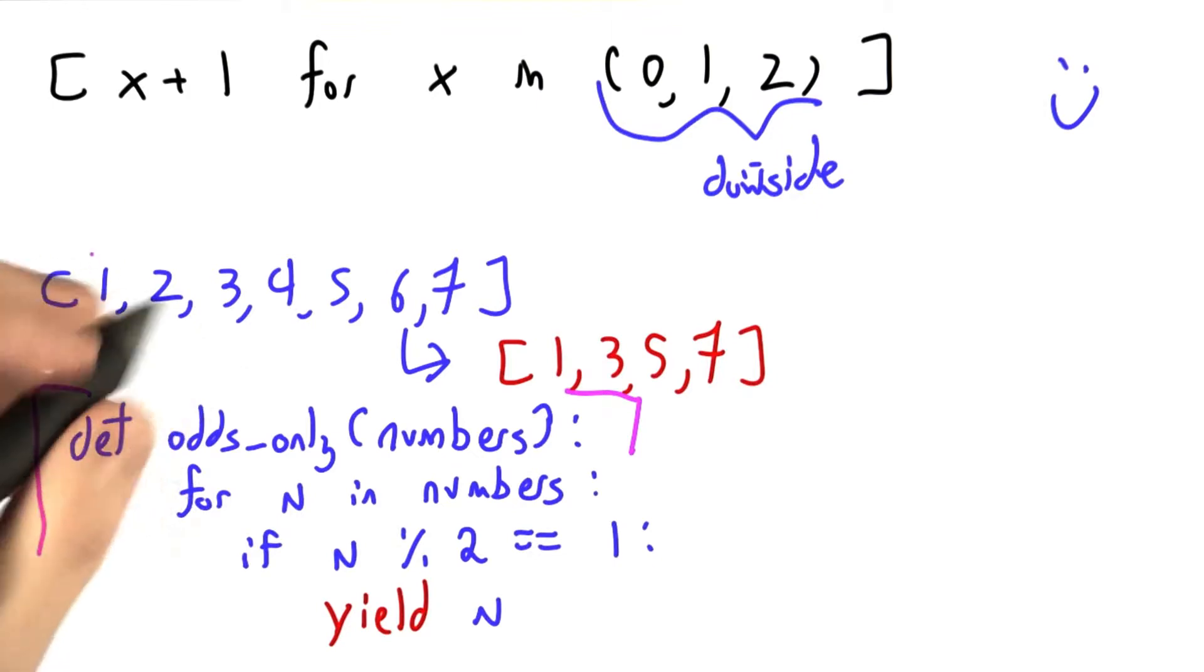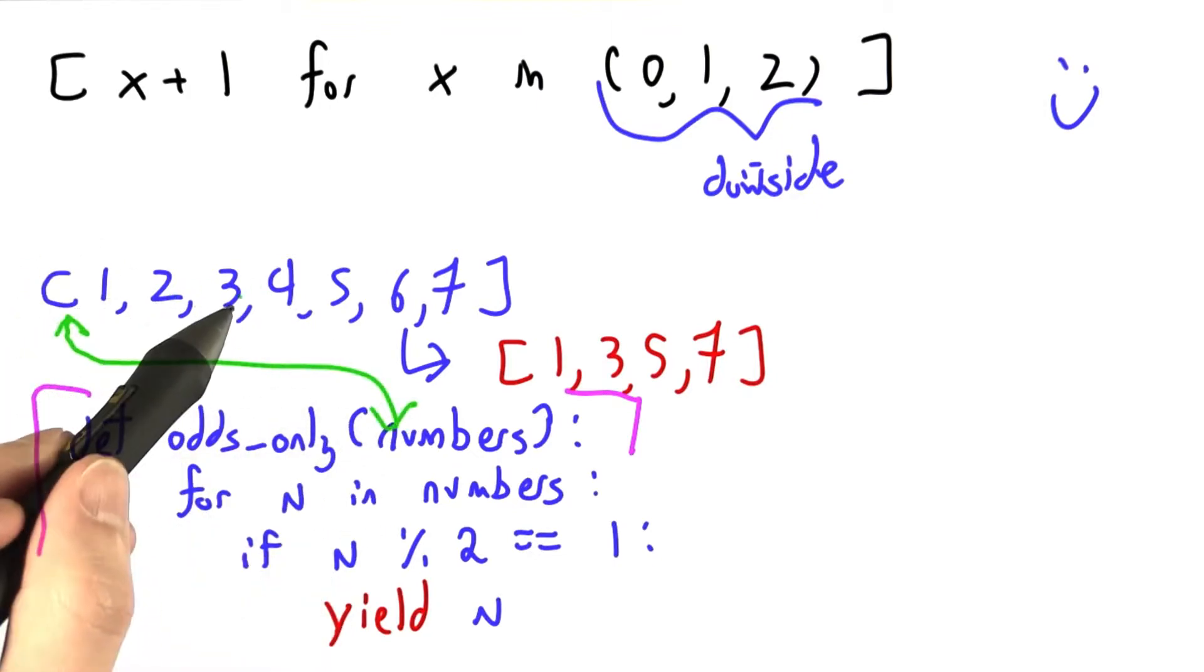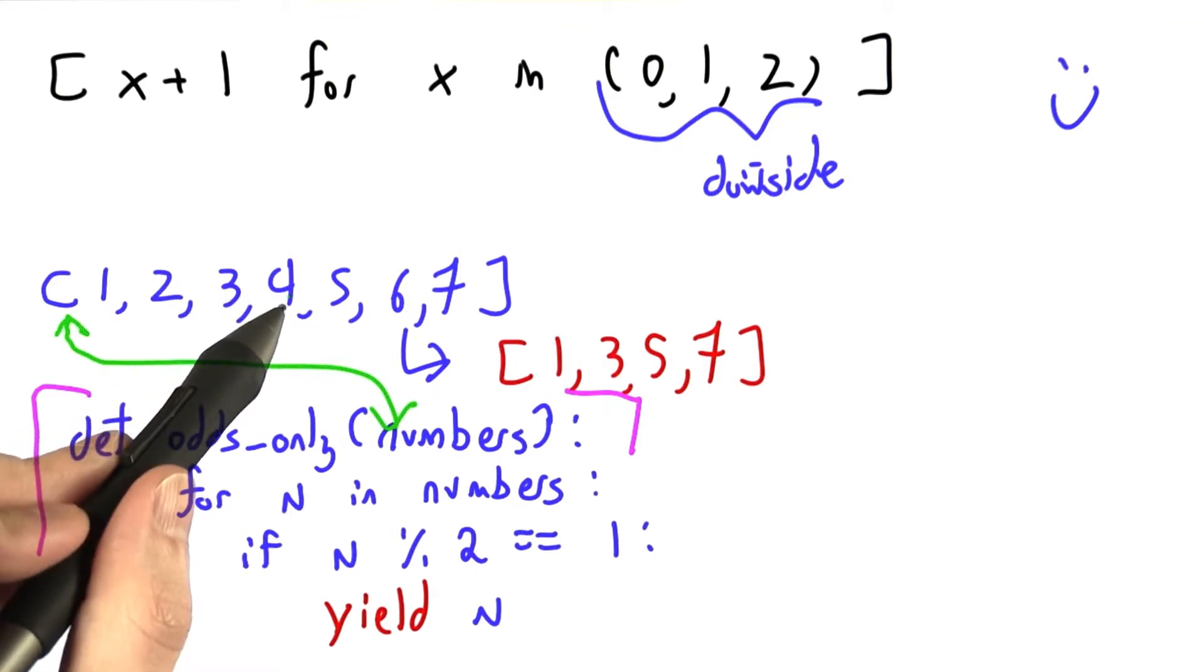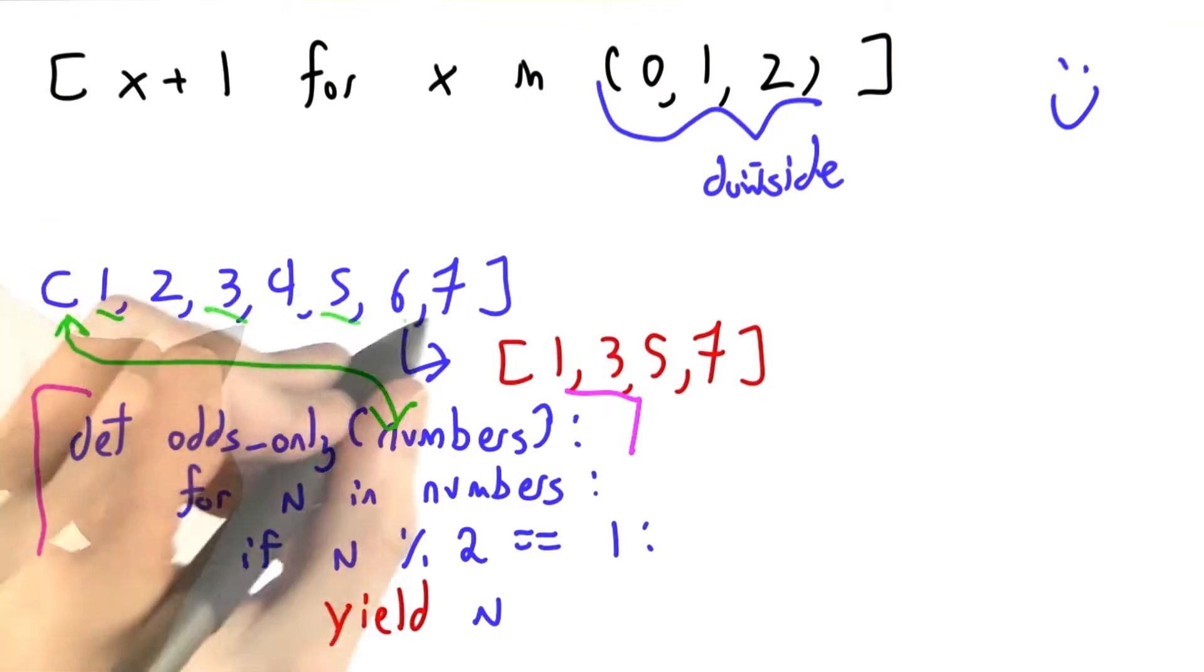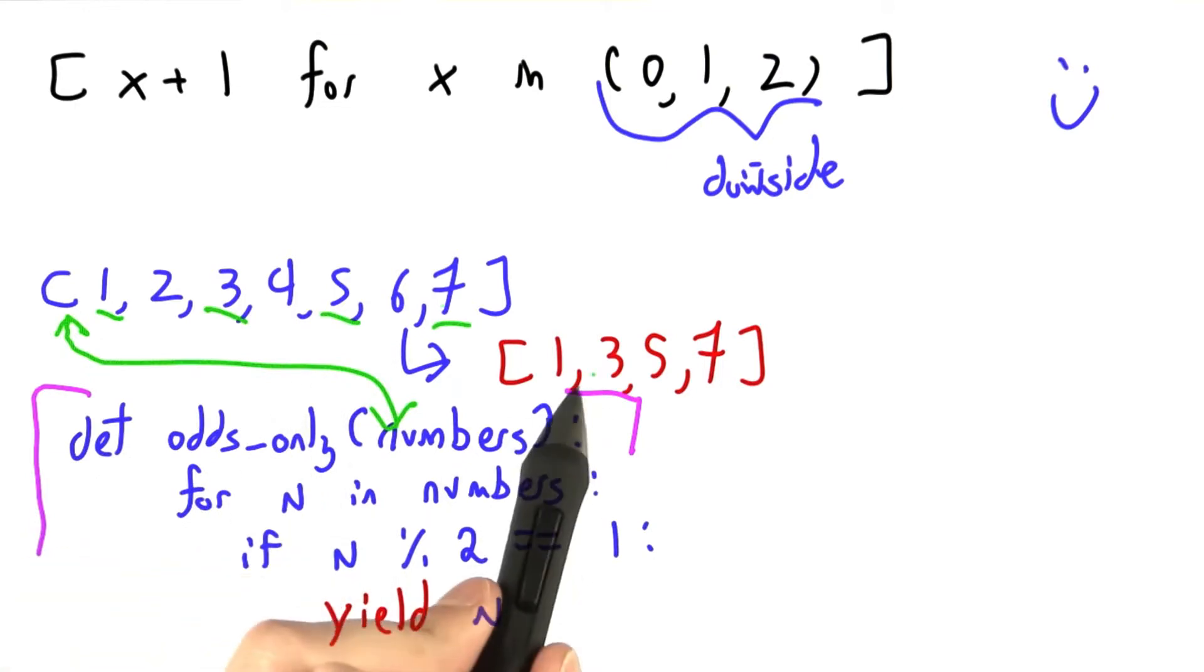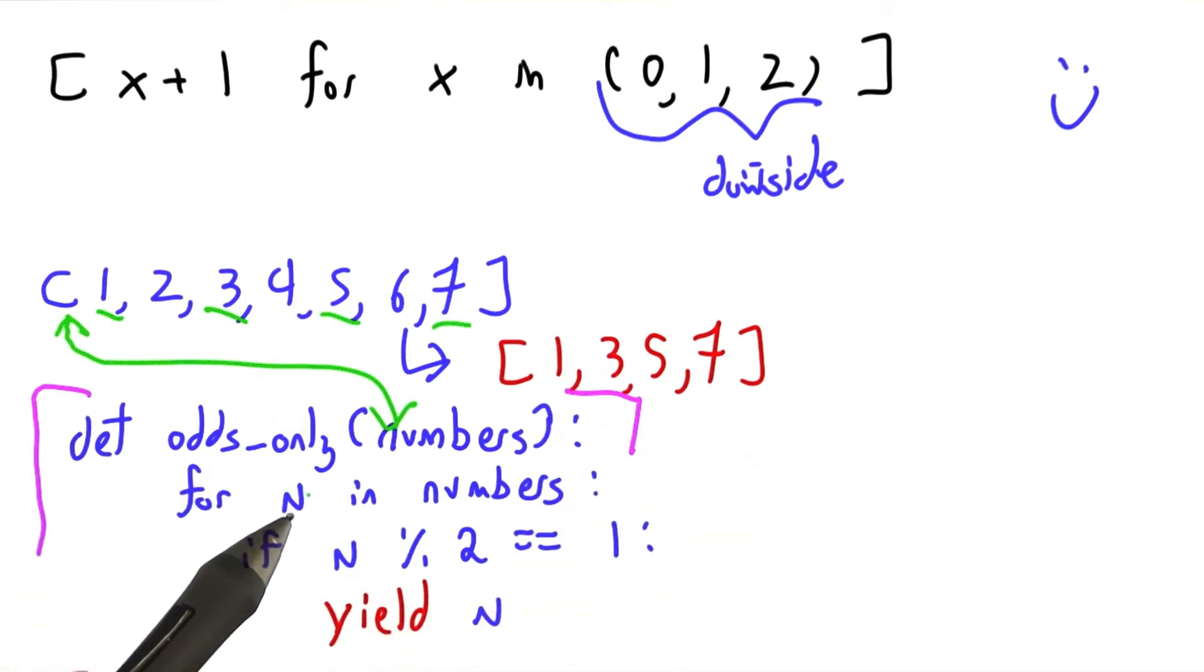Let's imagine that this big list here was numbers. We'll yield 1, not do anything with 2, yield 3, not do anything with 4, yield 5, not do anything with 6, and yield 7. That's exactly the output that we wanted. You can view this as sort of a convenient way of filtering.